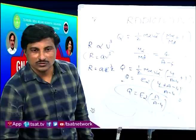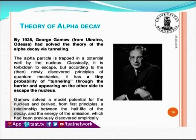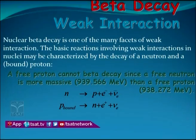The theory of alpha decay is well explained by quantum mechanics, not classical mechanics. Gamow explained that the alpha particle is trapped in a potential well by the nucleus. Classically, it is forbidden to escape, but according to quantum mechanical theory, there is quantum tunneling. When the alpha particle is trapped within the potential well and collides with the nucleus wall, there is a possibility of tunneling through the potential barrier, appearing on the other side to escape the nucleus. Gamow solved this model mathematically using wave functions.